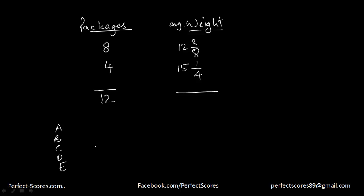The average of all packages should be between 12 and 15 only. Which means I can eliminate answer option E, answer option D, and answer option C — because C is 15.2, which is beyond 15.25, and similarly D is 15.5, which is greater than that. That means these two answer options can be easily eliminated, and I'm down to two answer options.